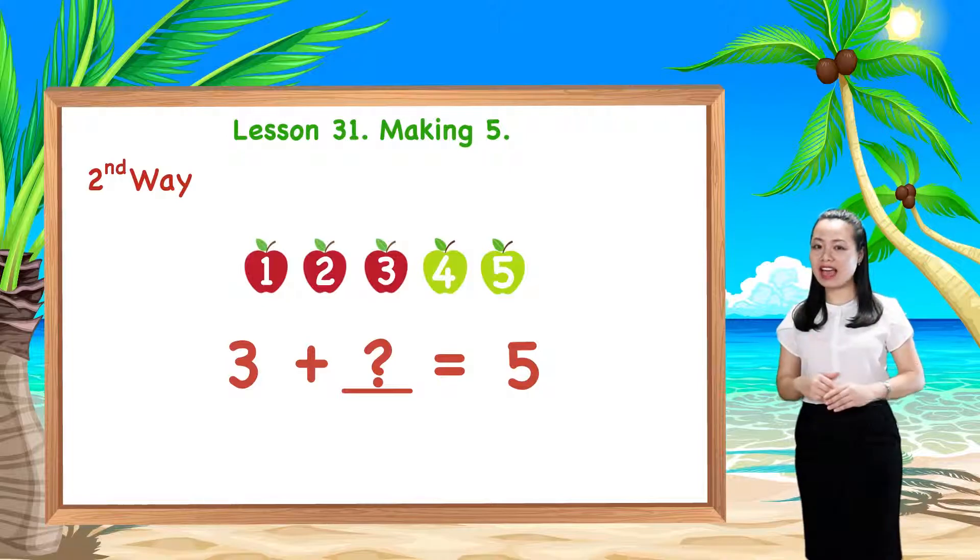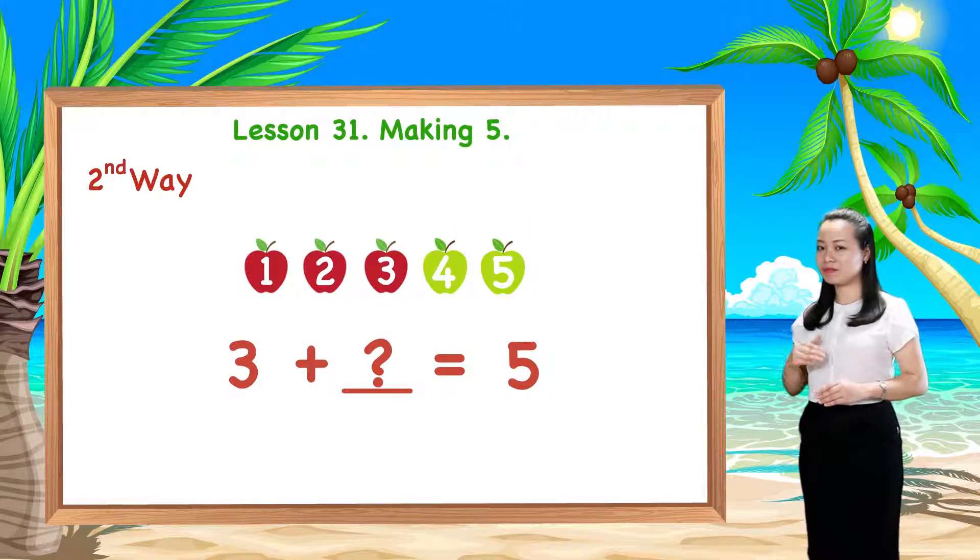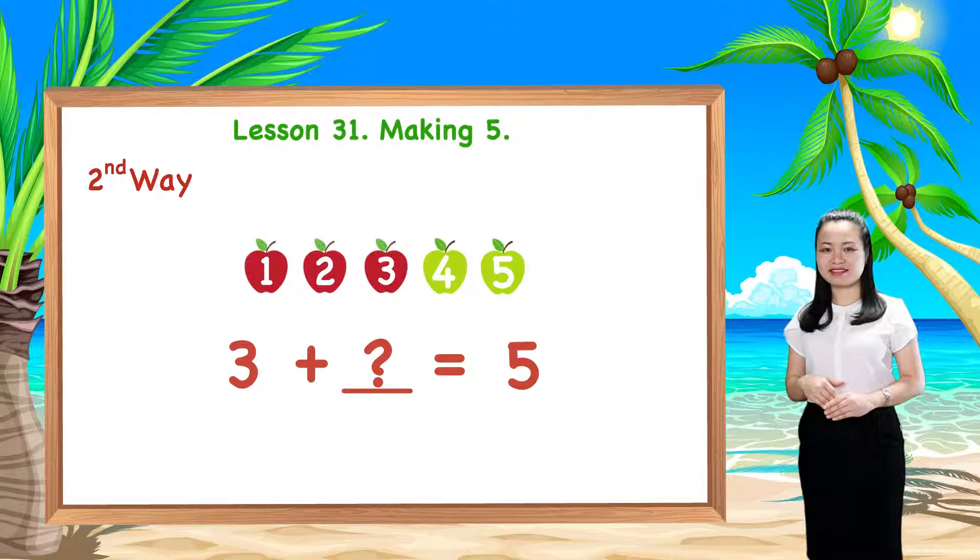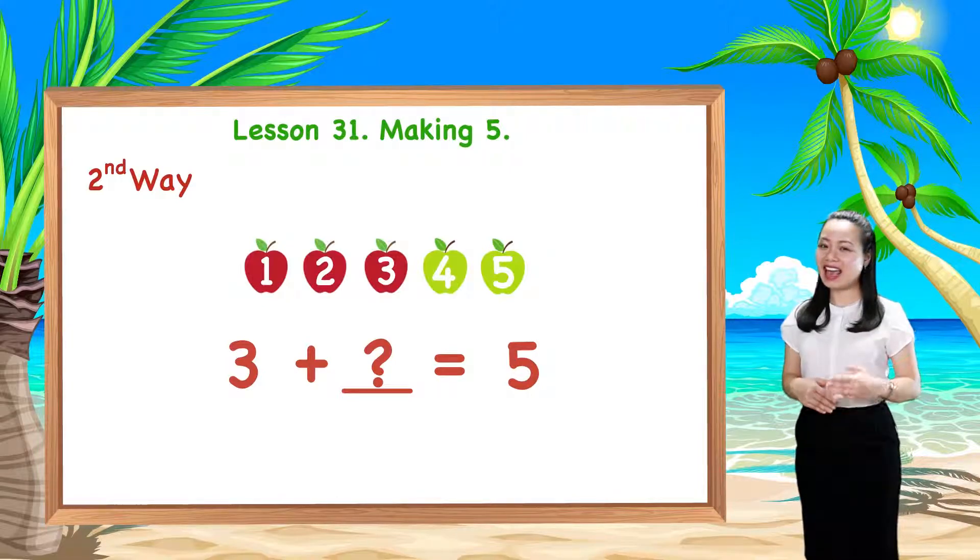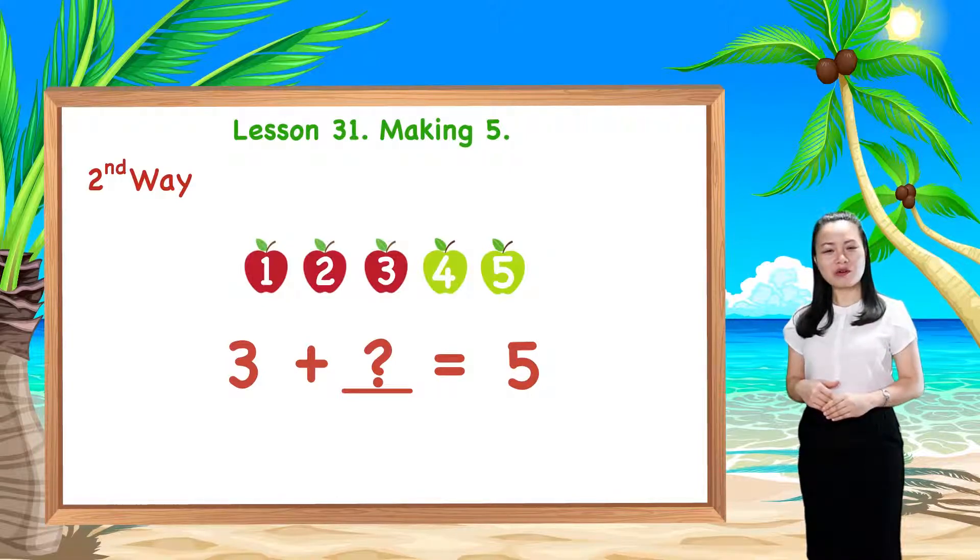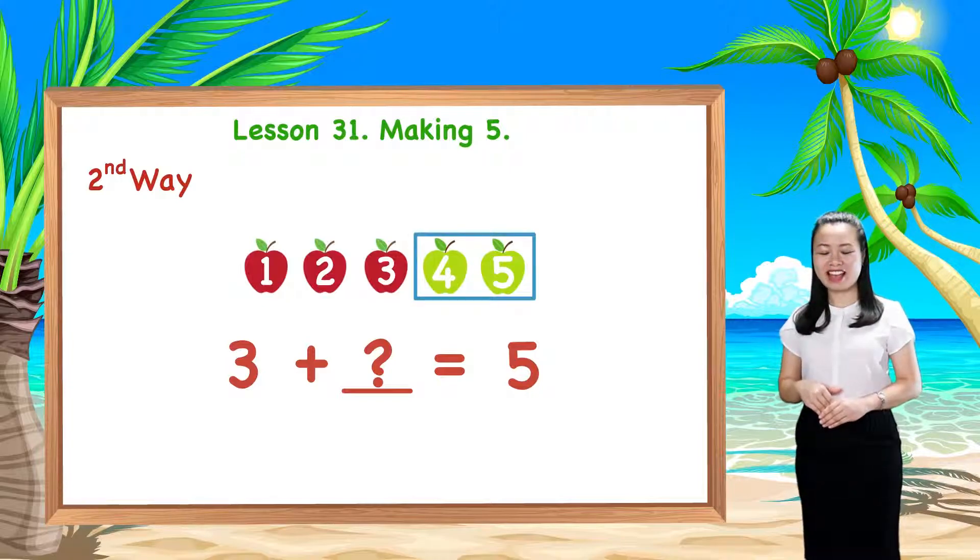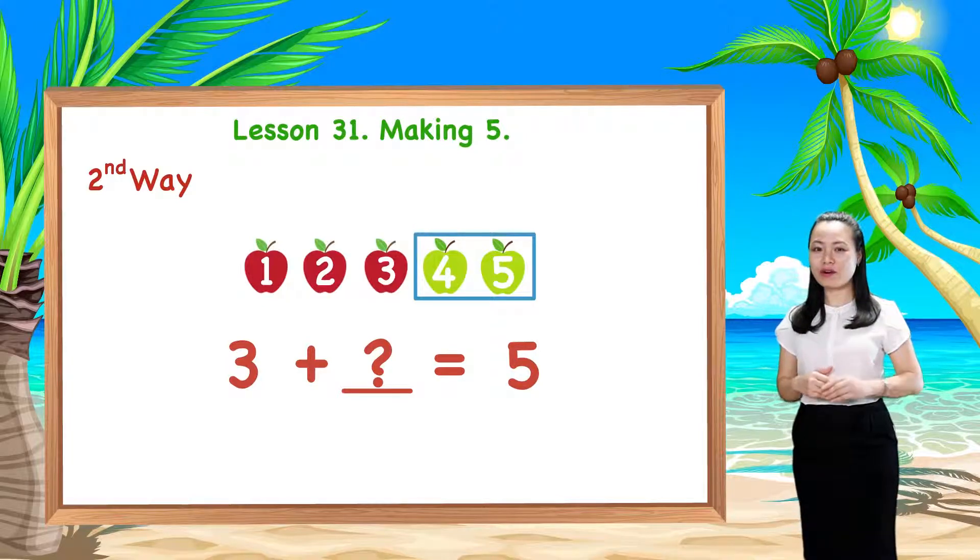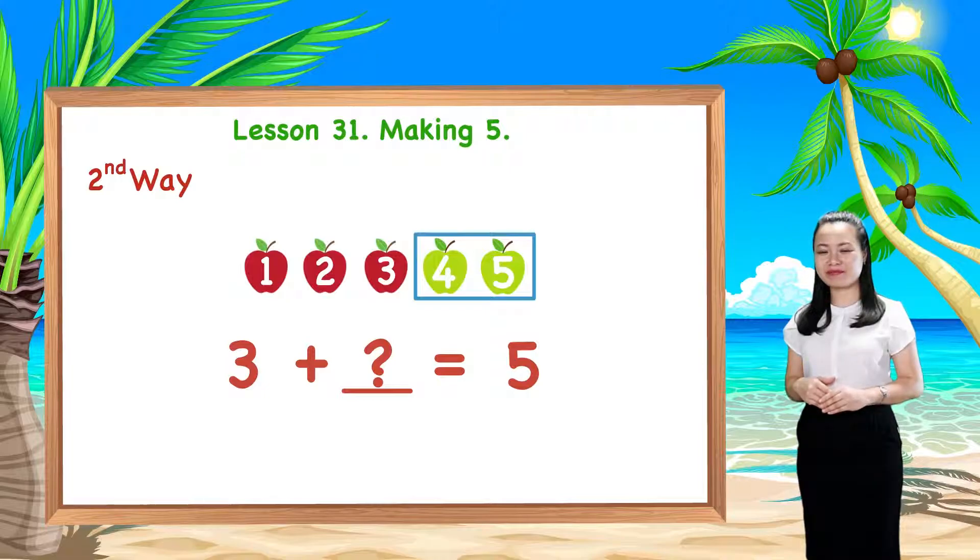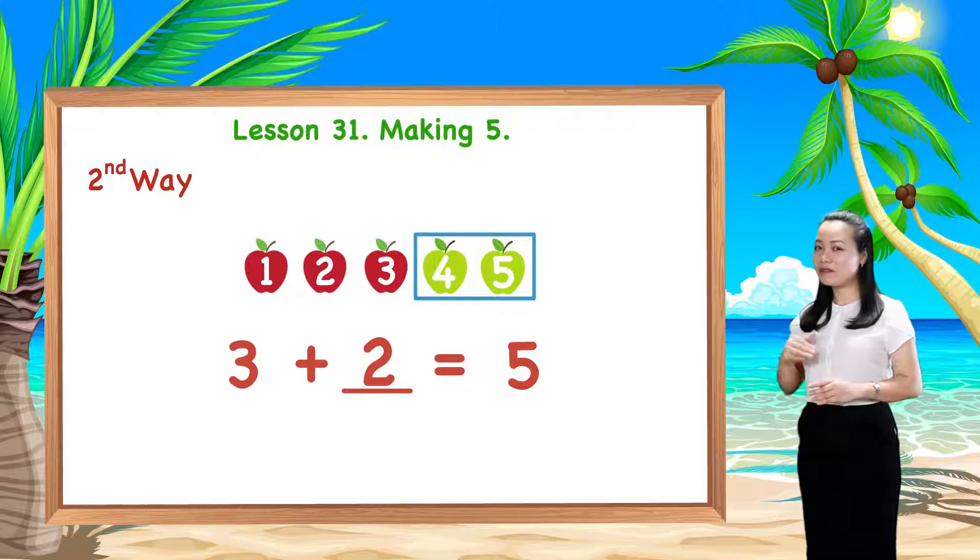Now, we have five apples. And you see, we've just drawn two more apples, which we need to have a total of five. Therefore, we also have three plus two equals five.